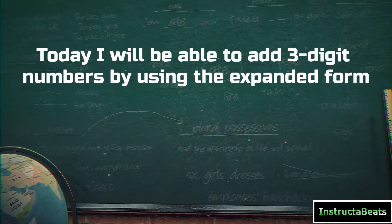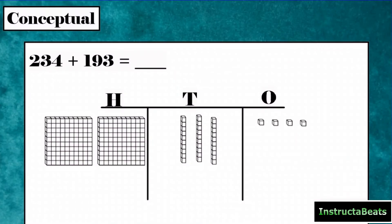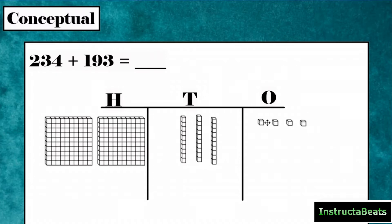Let's rewind back to when we learned how to add with place value blocks. When we're doing addition, we're bringing things together. Here you can see that I'm starting with 234. I've set that number up in my 100s, 10s, and 1s chart. I have two 100s for my 2 in the 100s place, three 10s for my digit 3 in the 10s place, and four 1s blocks in my 1s place.